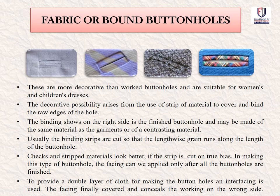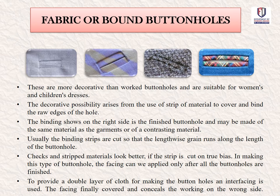Fabric or bound buttonholes are more decorative than worked buttonholes and are especially suitable for women's and children's wear. The decorative effect arises from the use of a strip of material to cover and bind the raw edges of the hole. The binding shows on the right side as a finished button lip and may be made of the same or contrasting material. Binding strips are cut so that the lengthwise grain runs along the length of the buttonhole, and checks and stripes look better cut on the bias. The facing can be applied only after the buttonholes are finished, and interfacing is used to provide a double layer of cloth.